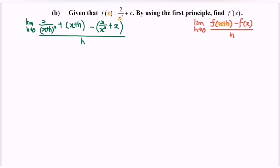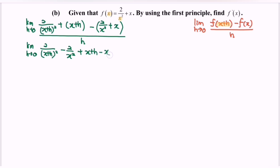So now what we have to do is to expand the situation. Limit when h approaching 0, we will have 2 over (x plus h) squared minus 2 over x squared, plus x plus h minus x, over h. Note that x minus x gives us only h.